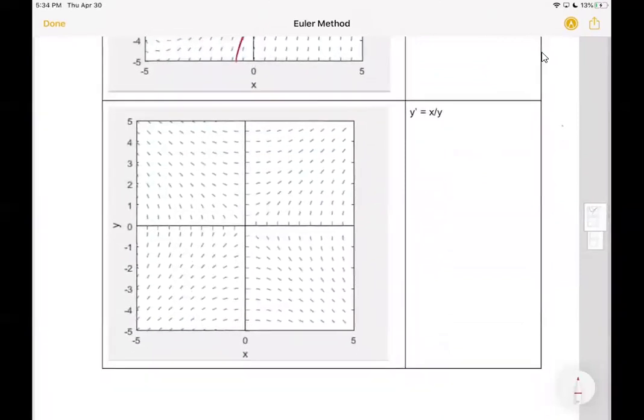So let's go to another one. This is y prime equals x over y. So the derivative is given by x over y. And that generates our slope field. So if I were to start out here, it looks like I should be heading straight up. Well, let me switch back to my pencil. So I should be heading straight up. But then I start to curve to the right.